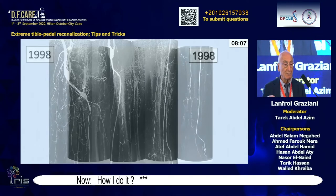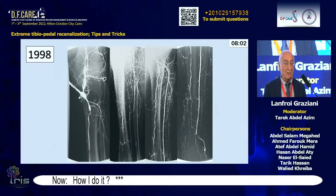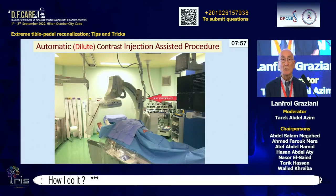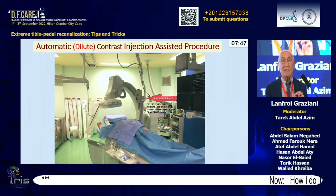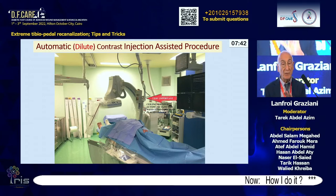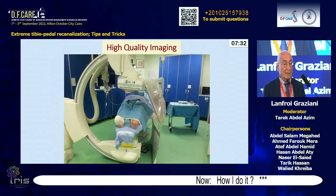Particularly after failed bypasses, because of poor runoff, angioplasty was crucial in saving the leg. This is another example of a failed bypass. What is important in my opinion is to have an automated injector synchronized with the fluoroscopy and ceiling-mounted imaging to give the room the best space available.